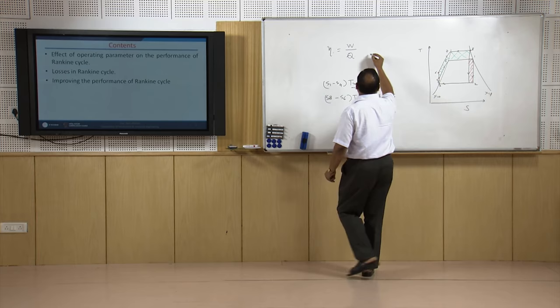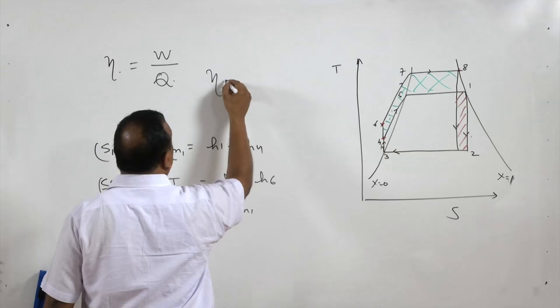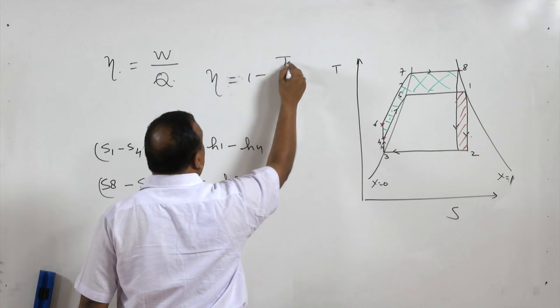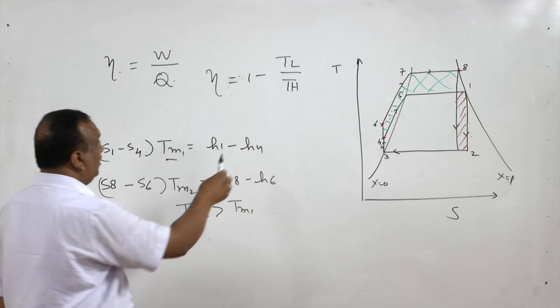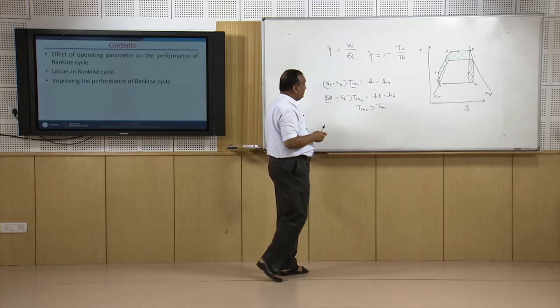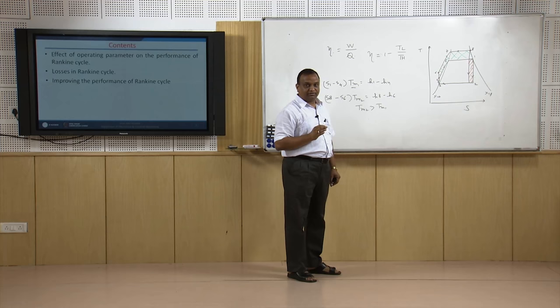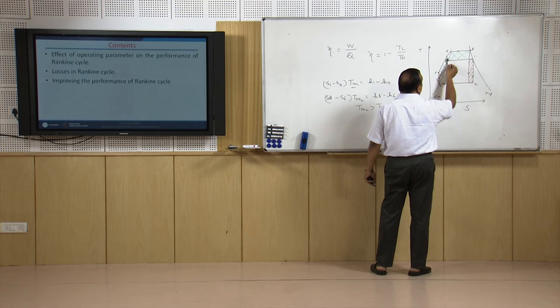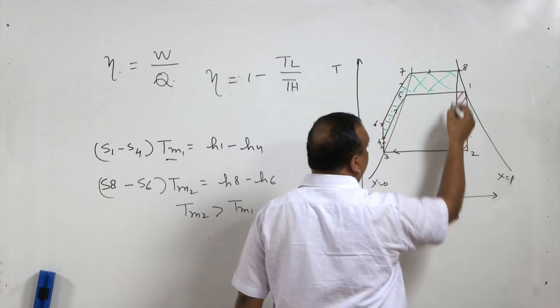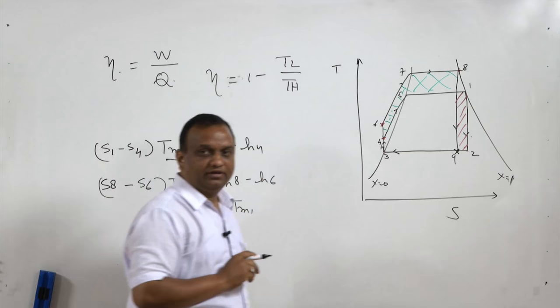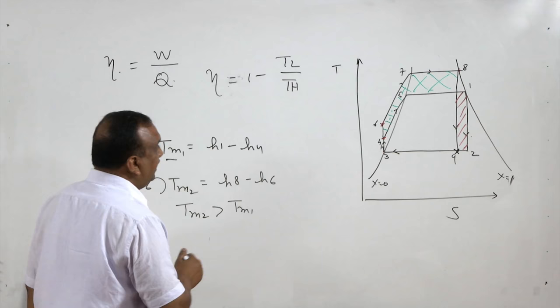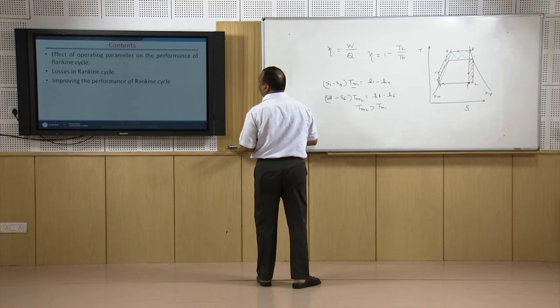Mean temperature of heat addition is important because for a Carnot cycle efficiency = 1 − TL/TH, where TH is the temperature of the source and TL the temperature of the sink. So if we keep increasing the mean temperature of heat addition, the efficiency of the cycle will increase. When we increase the boiler pressure, the efficiency increases. At the same time, the quality of vapor coming out of the turbine keeps reducing — that is a major issue. Also, the heat rejected in the condenser is reduced.